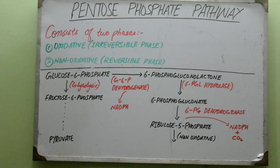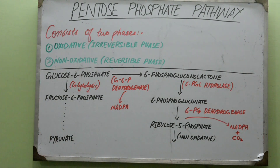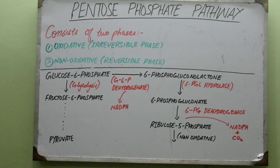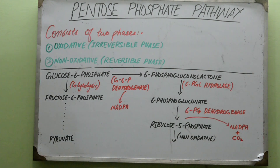This Pentose Phosphate Pathway is basically a pathway about a 5-carbon compound — a journey of a 5-carbon compound with a phosphate attached. It occurs in the cytosol and is a very important pathway to provide intermediates of glycolysis, NADPH, as well as ribose 5-phosphate, which is used in the synthesis of DNA, RNA, and nucleotides generally.